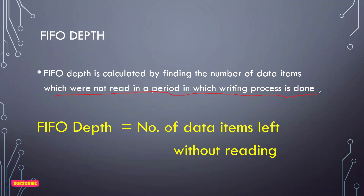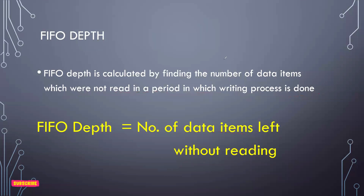It's as simple as this: if you purchased 5 kg of sugar but only have a 3 kg container, you store 3 kg and find another place for the remaining 2 kg. Similarly, FIFO depth is nothing but how much data module B is not able to read — you put it in temporary storage. In short, the FIFO depth equals the number of data items left without being read.